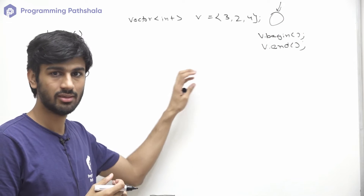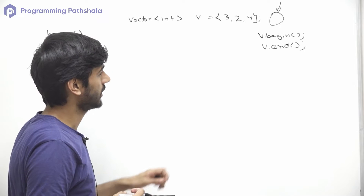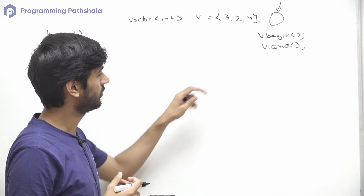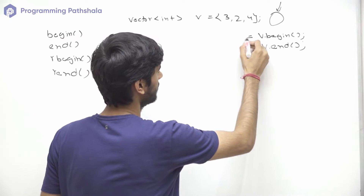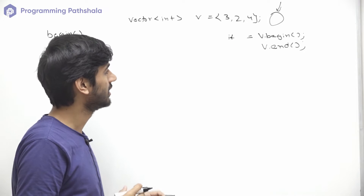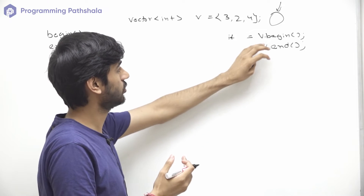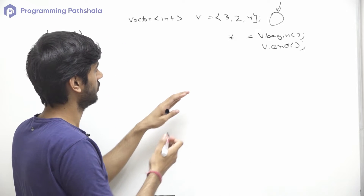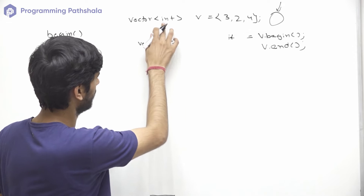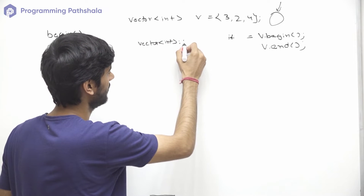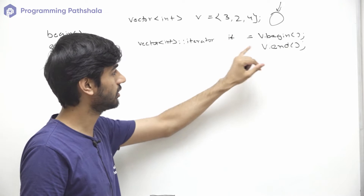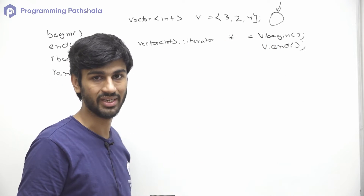Let's take an example. v.begin() returns an iterator pointing to the first element. To store this in a variable called 'it', that variable must have a data type that can store an iterator for a vector of int. The syntax will be vector<int>::iterator, and then we assign it to v.begin().